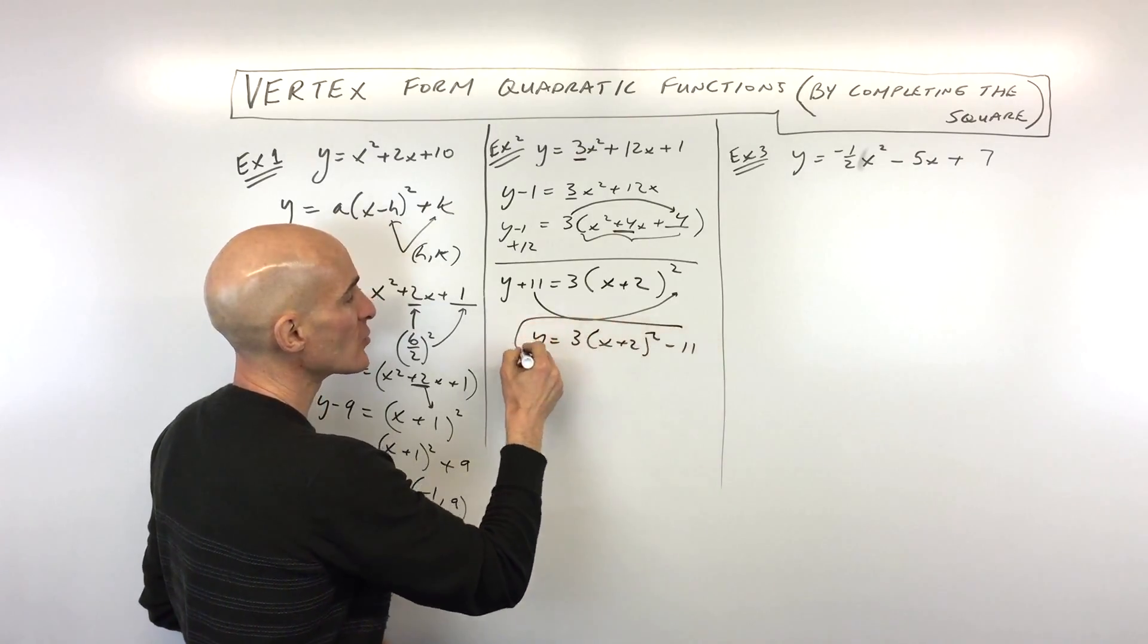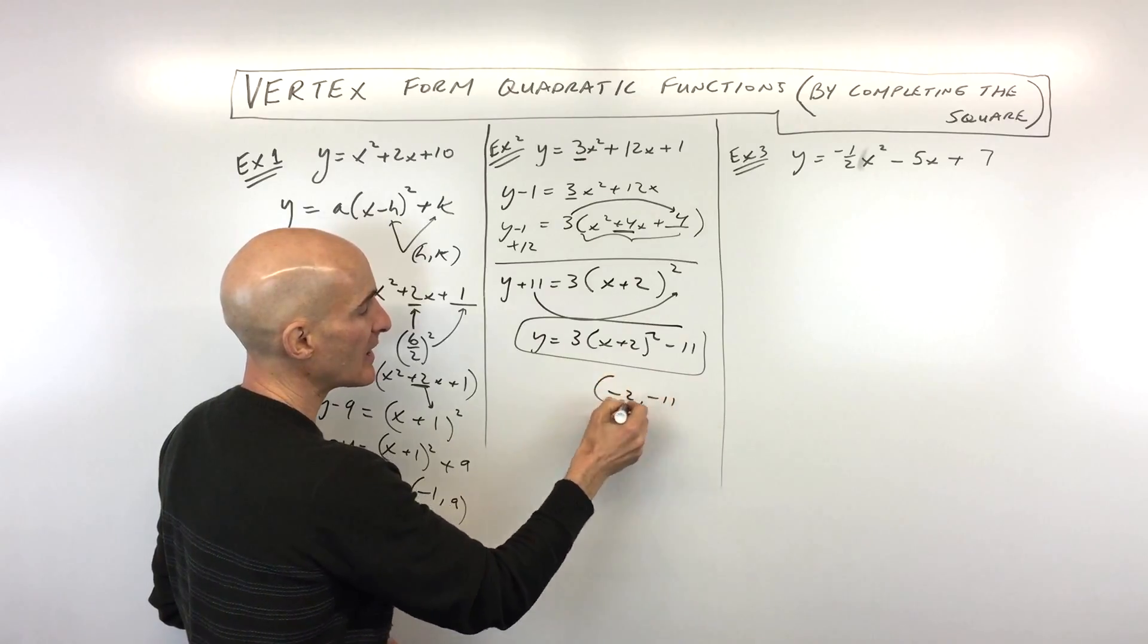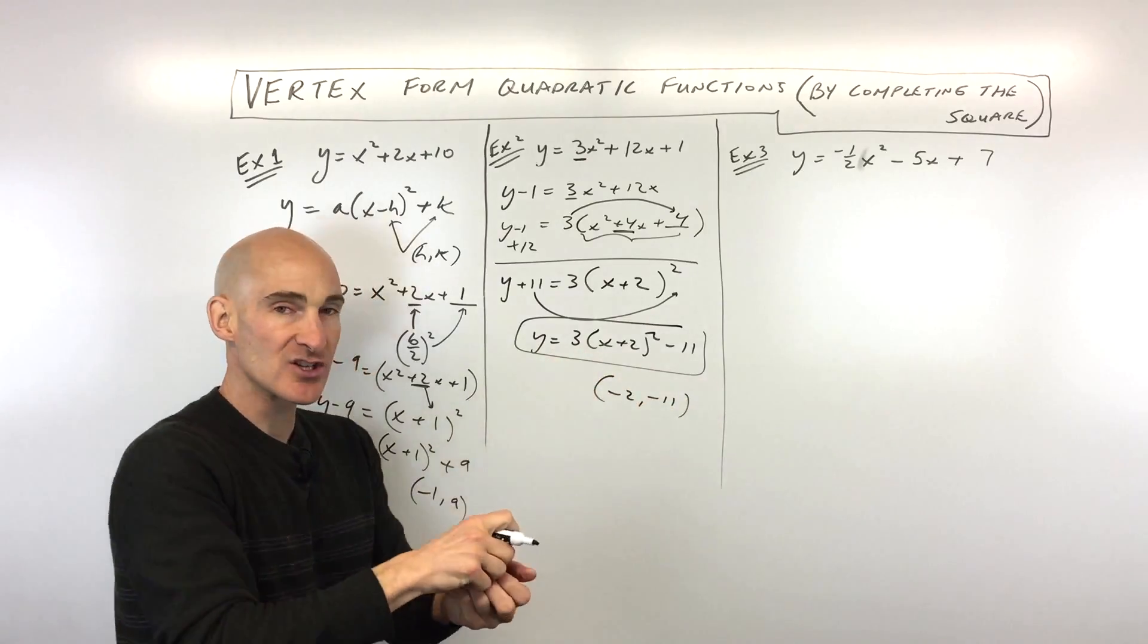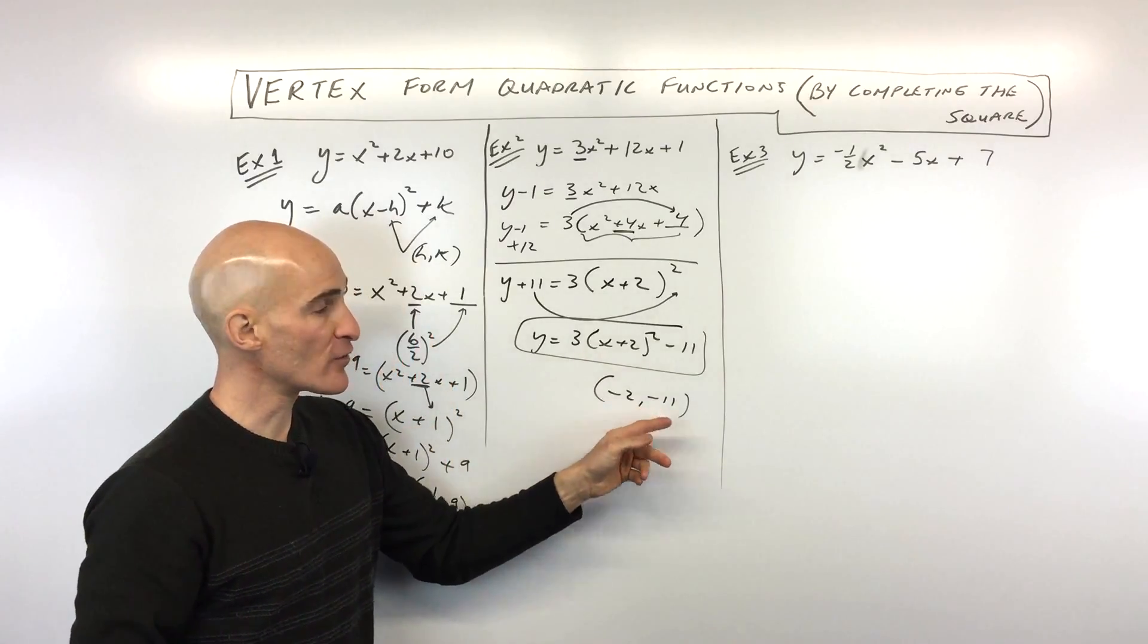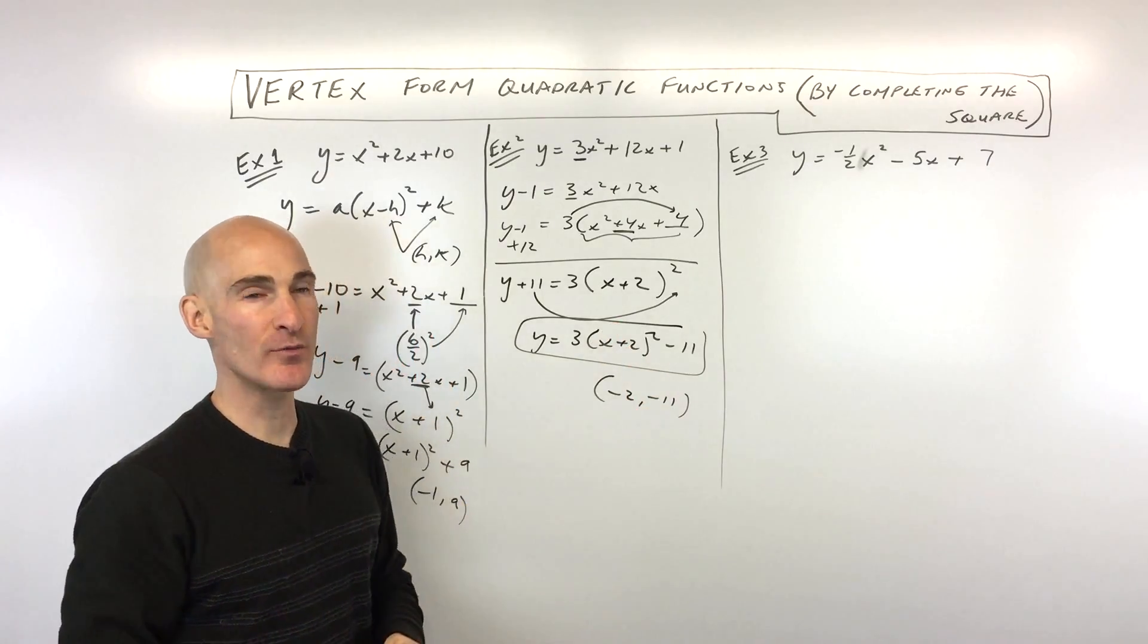And there you go, that's your equation. You can see your vertex is going to be at negative 2 comma negative 11. The 3 is actually going to stretch the graph. It's opening up, it's going to be a little bit narrower. But this is going to be your vertex where the graph changes direction, or bends.